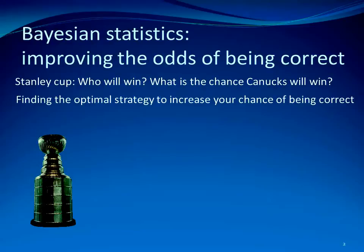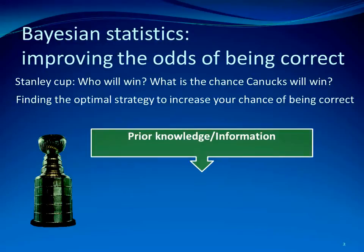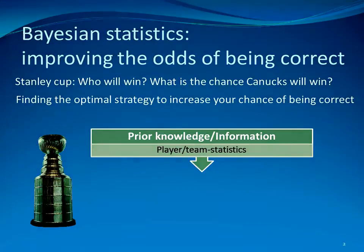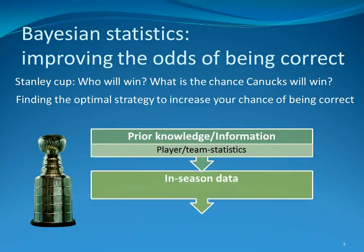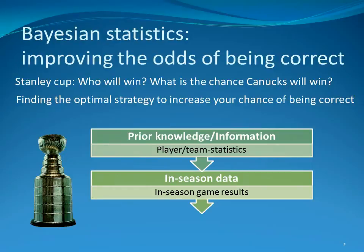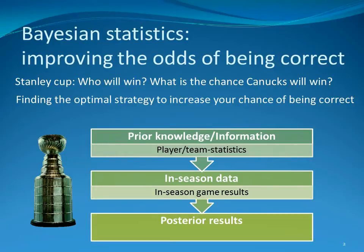So how would you do that in the case of the Stanley Cup? For one, you can start by asking yourself what prior knowledge or information you have to predict who will win. This prior knowledge might be the player or team statistics from the regular season. Once the playoffs start, you may revise those predictions based on the in-season game results. By integrating the in-season information with your prior knowledge, you may have a better chance of predicting the chance of your favorite team winning the cup.